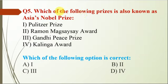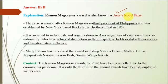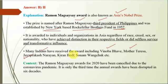Question number 5: which prize is also known as Asia's Nobel Prize? The correct option is B — the Ramon Magsaysay Award. This award is named after Ramon Magsaysay, the third President of the Philippines, and was established by the New York-based Rockefeller Brothers Fund in 1957. Many Indians have received this award including Vinoba Bhave, Mother Teresa, Jai Prakash Narayan, Kiran Bedi, and Sonam Wangchuk. The 2020 awards have been cancelled due to the coronavirus pandemic — only the third disruption in the award's 60-year history.